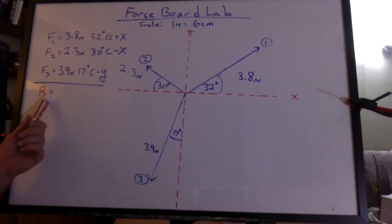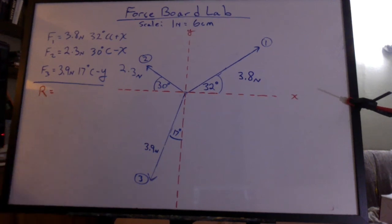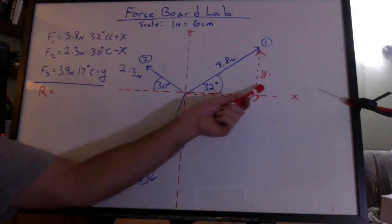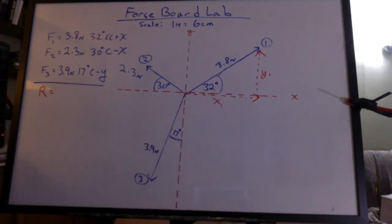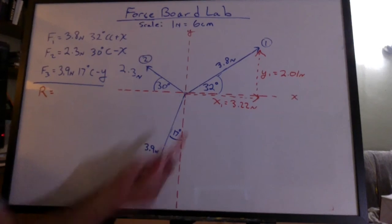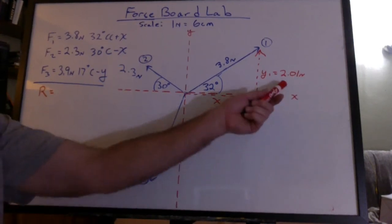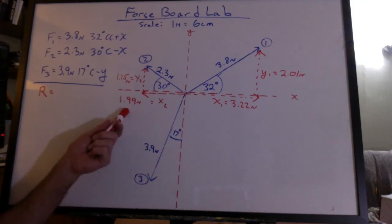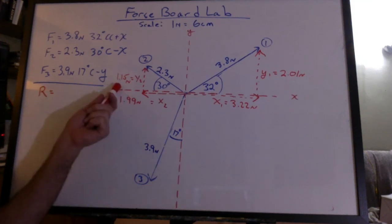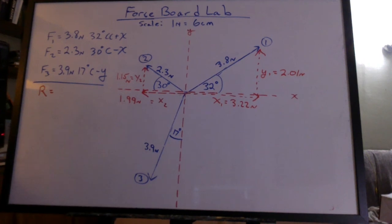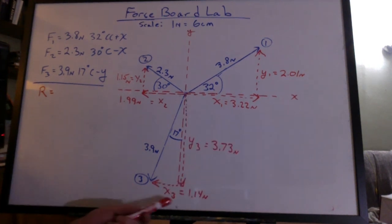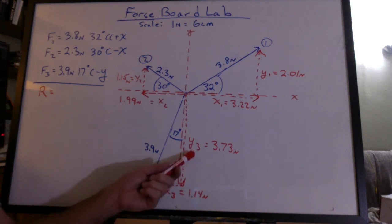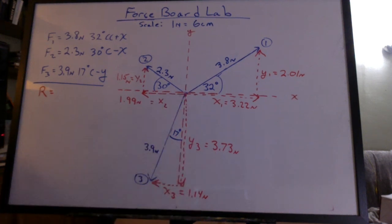Now we're going to find the resultant mathematically. We'll break all the vectors up into x and y components, x1, y1, just like we did with the orienteering lab. We get 3.22 newtons and 2.01 newtons. We get 1.99 newtons and 1.15 newtons for the x and y for the second vector. And the last vector, I get an x of 1.14 newtons going to the left, and a y going down of 3.73 newtons.